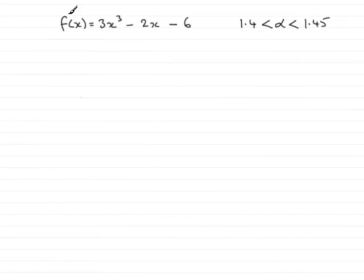Now in this question we're given that f(x) equals 3x cubed minus 2x minus 6 and asked to show that there's a root alpha somewhere between 1.4 and 1.45.